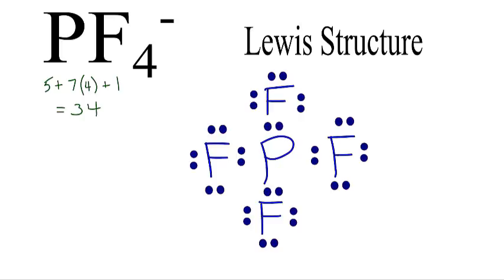It turns out phosphorus can have more than eight valence electrons. It is an exception, or it can be an exception, to the octet rule. So we can put those remaining two valence electrons on that central phosphorus atom, and that'll complete this Lewis structure. So let's put them right here at an angle.